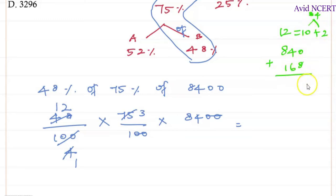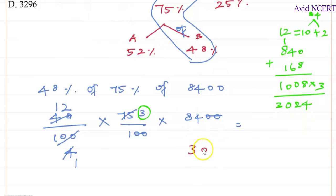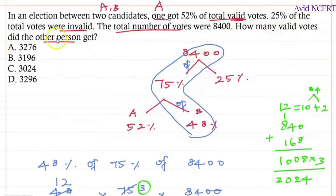Adding 840 plus 168 gives 1008, then multiplying by 3 gives us 3024. So the total number of valid votes B got is 3024. The valid votes the other person received is 3024. Thanks for watching — if you have any questions please let me know in the comments.